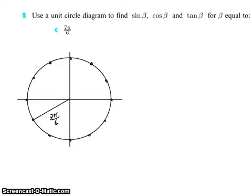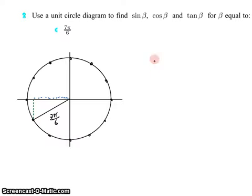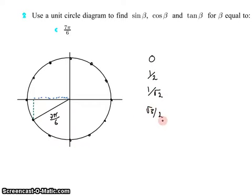We want the sine, cosine, and the tangent. When we're dealing with these major angles on the unit circle — thirds, halves, quarters, sixths — sine and cosine always have one of five different values. Here they are in order: sine or cosine is always 0, 1/2, 1/√2, √3/2, or 1.